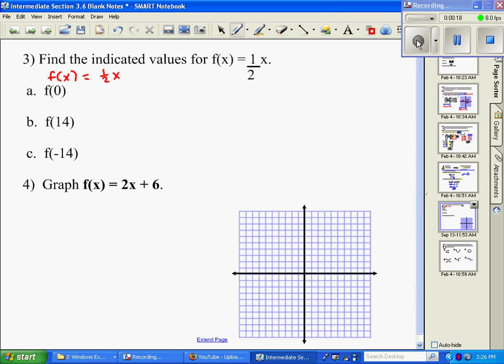So basically, I want to substitute all these values in for x. I'm going to do it one time for 0, one time for 14, and one time for negative 14. So I'm going to write 1 half, and in place of x, I'm going to make that substitution. So here I get 0, so multiply that out, and I'm just going to get 0. So f of 0 equals 0.